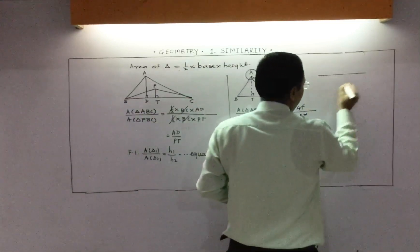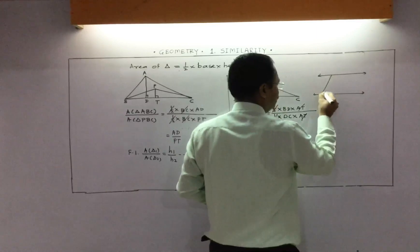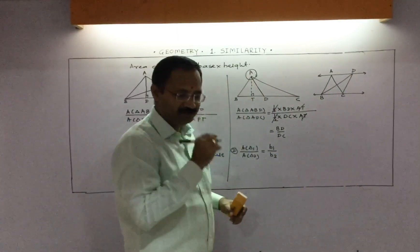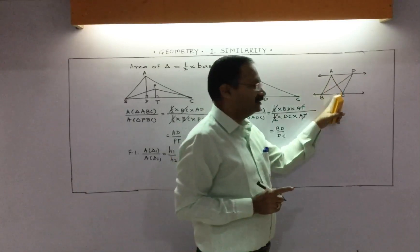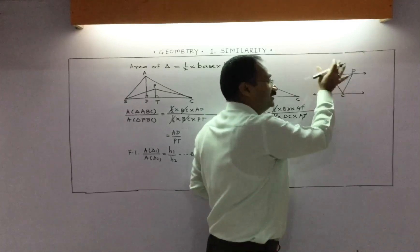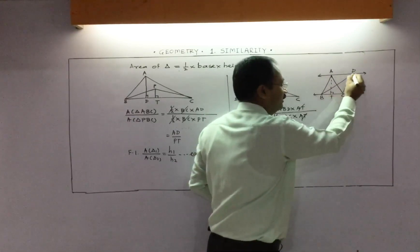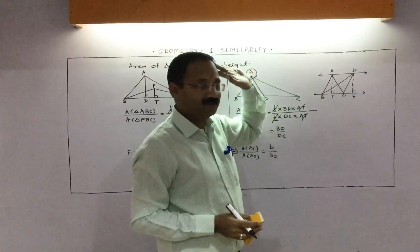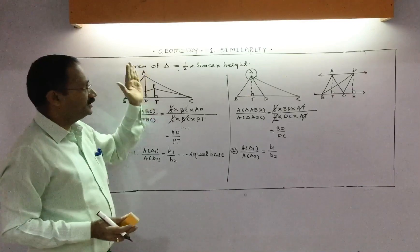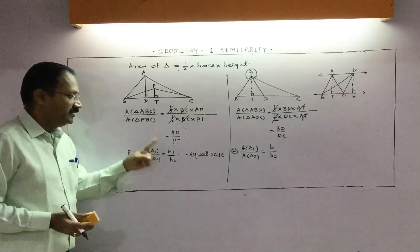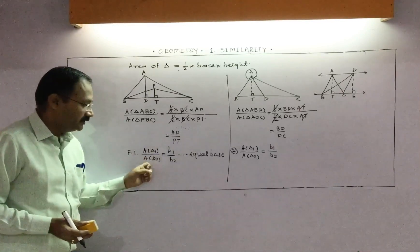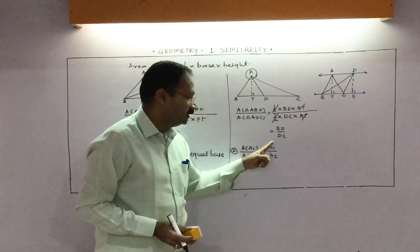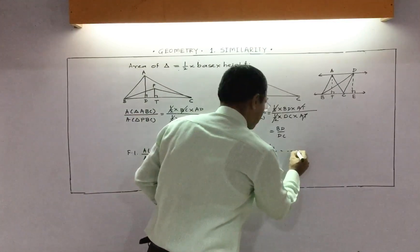Now observe this figure and tell me the heights of the triangles. Both triangles lie between parallel lines, so their heights are equal — if you draw the heights, both lie between the same parallel lines. Summary: Formula 1 — if the base is equal, area of triangle 1 upon area of triangle 2 equals H1 upon H2. Formula 2 — if height is equal, the ratio equals B1 upon B2.